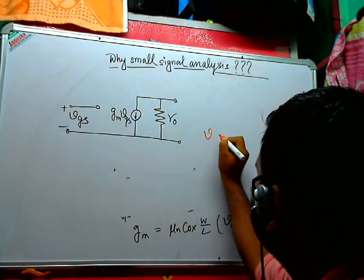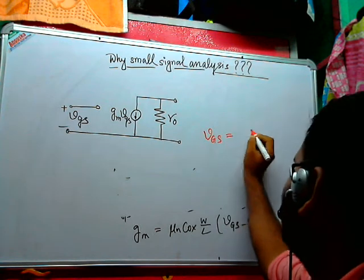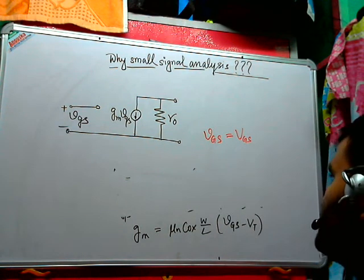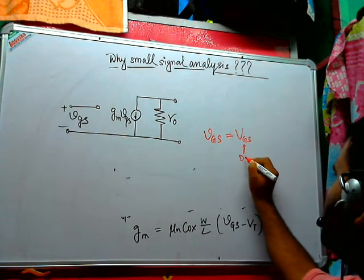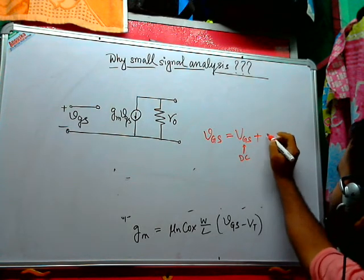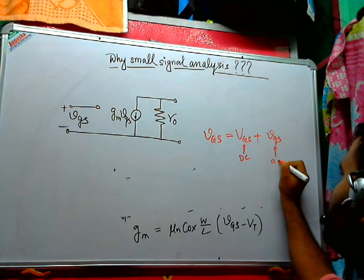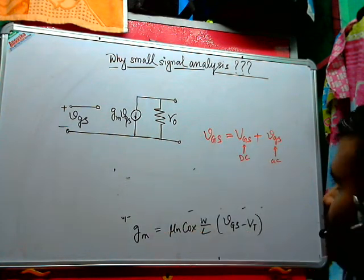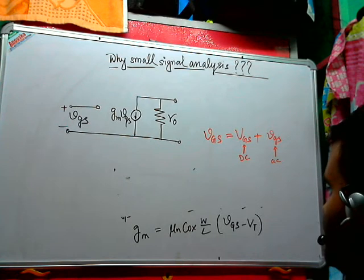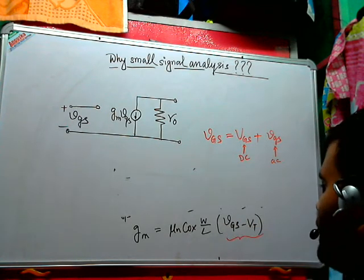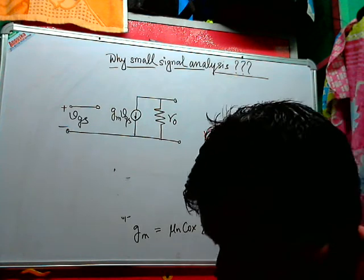Small v capital G S as capital V capital G capital S means the DC quantity, plus small v small g s, that means the AC quantity. So the AC component is riding on top of this DC component. Now the important thing that you have to observe is that this function GM, this quantity GM, is a function of input voltage.